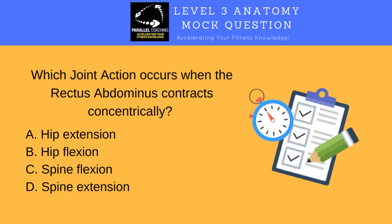Now you know the fundamentals of joint actions and muscle contractions — let's test your knowledge. This mock question is from a Level 3 anatomy exam to prepare you for your Level 3 anatomy and physiology exam. Here's the question: which joint action occurs when the rectus abdominis contracts concentrically? Is it A — hip extension, B — hip flexion, C — spine flexion, or D — spine extension? Take a moment to think and pop your answer in the comments box below, or pause the video to work it through.